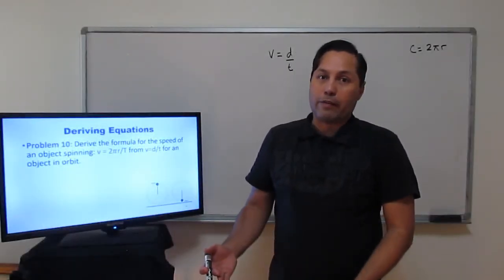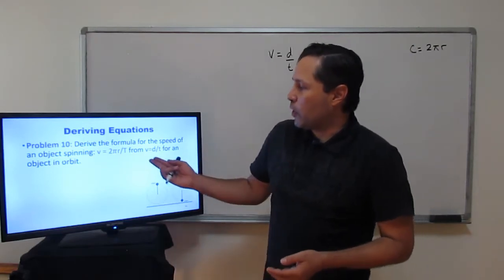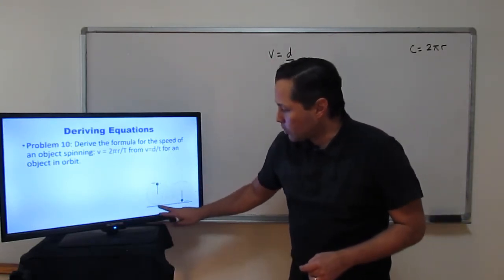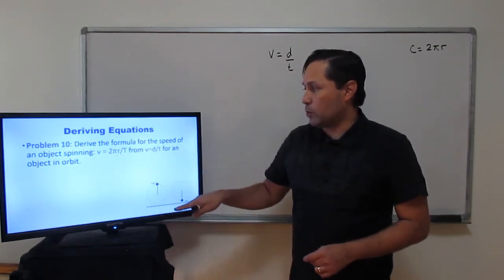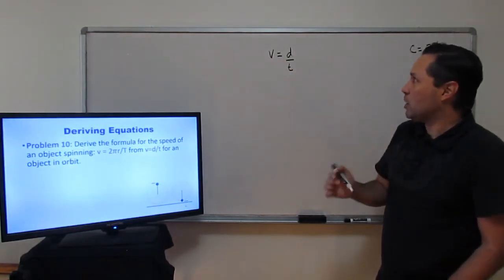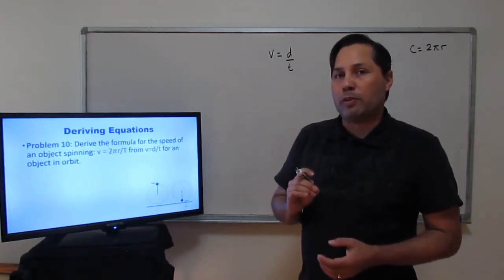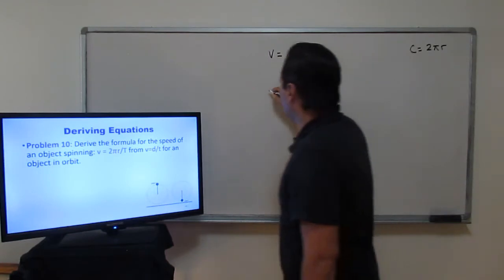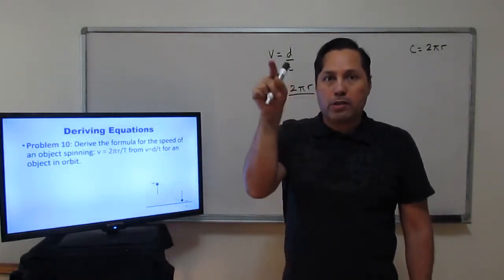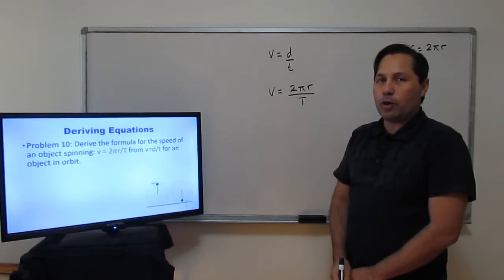Next section: deriving formulas — an essential skill. Problem 10: derive the formula for the speed of an object in a circular path. Start with speed equals distance over time. The distance traveled in a circular path is the circumference, 2πr. The time to complete one revolution is the period T. So: V = 2πr / T.